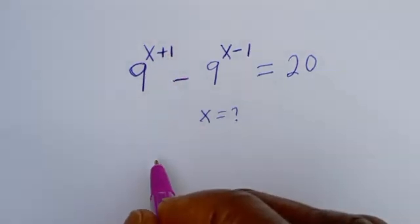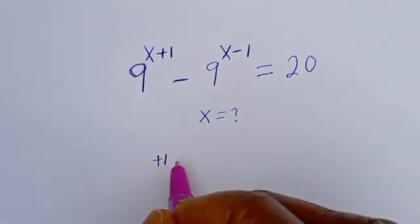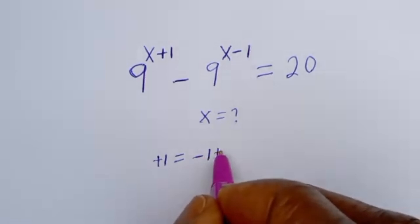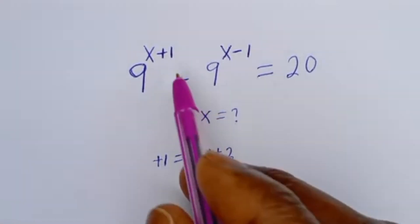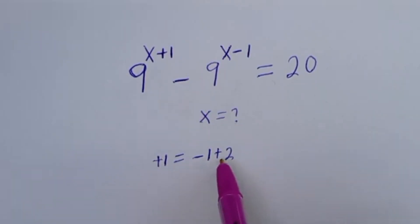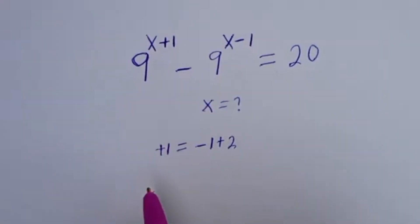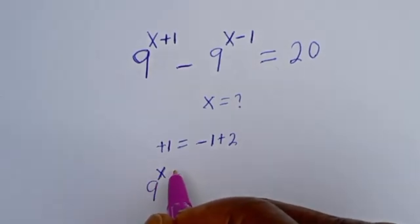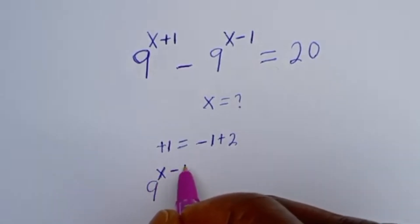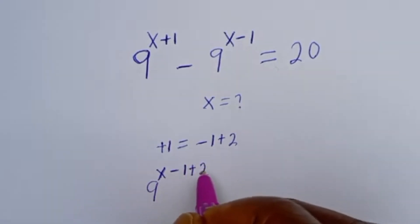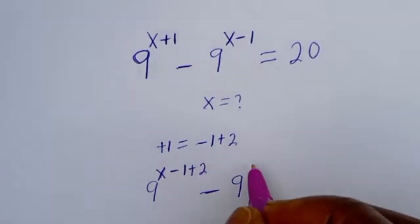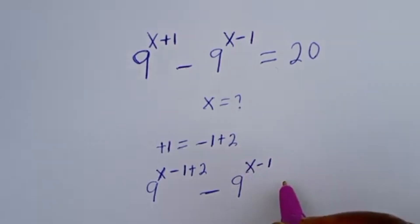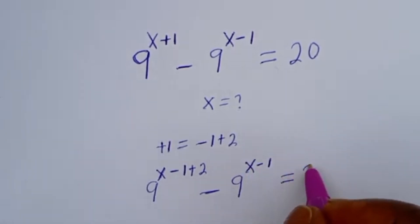Now let's see — this plus 1 can be written as minus 1 plus 2, and minus 1 plus 2 will give you plus 1. Then we can substitute this for this. That is 9 to the power of x minus 1 plus 2, then minus 9 to the power of x minus 1, is equal to 20.